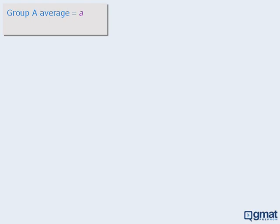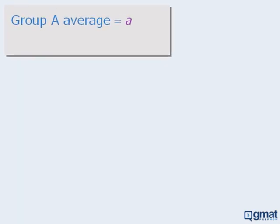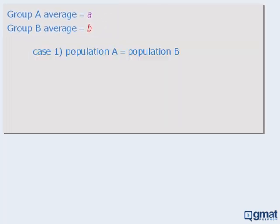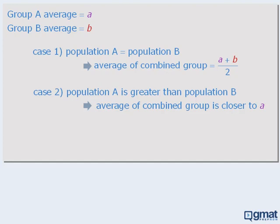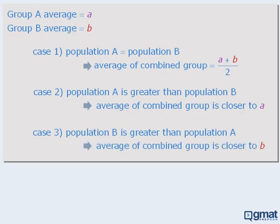We can summarize these results as follows. Let group A have some average measurement A and group B have some average measurement B. When we combine these two groups, the combined average depends on which group has the greatest population — giving us three cases. Case 1: if the population of group A equals the population of group B, the combined average equals the average of the two individual averages. Case 2: if the population of group A is greater than group B, the combined average will be closer to average A. Case 3: if the population of group B is greater than group A, the combined average will be closer to average B.